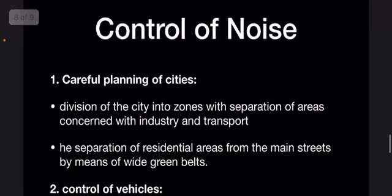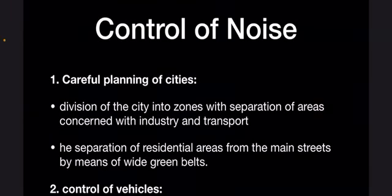Next, we have control of noise. The first way is careful planning of cities. This is done by two methods: division of the city into zones which separate the areas concerned with industries and transport, and separation of residential areas from the main streets by means of wide green belts. Green belts are strips of trees which help reduce sound.